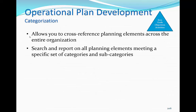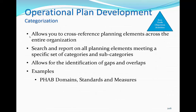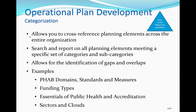Categorization allows you to cross-reference or tag planning elements across the entire organization with a specific set of categories and subcategories. Once categorized, you can search and report on all planning elements meeting a specific set of categories and subcategories. Categorization allows you to identify any gaps and overlaps in services provided across the entire department. Some examples of the categories in the dashboard are: FAB Domains Standards and Measures, Funding Types, Essentials of Public Health and Accreditation, and Sectors and Clouds. These categories can be added, deleted, or edited as desired. Assignment of leaders, monitoring progress, and categorization are part of the Do phase of the PDCA cycle. This is the actual execution of the plan that we developed earlier.